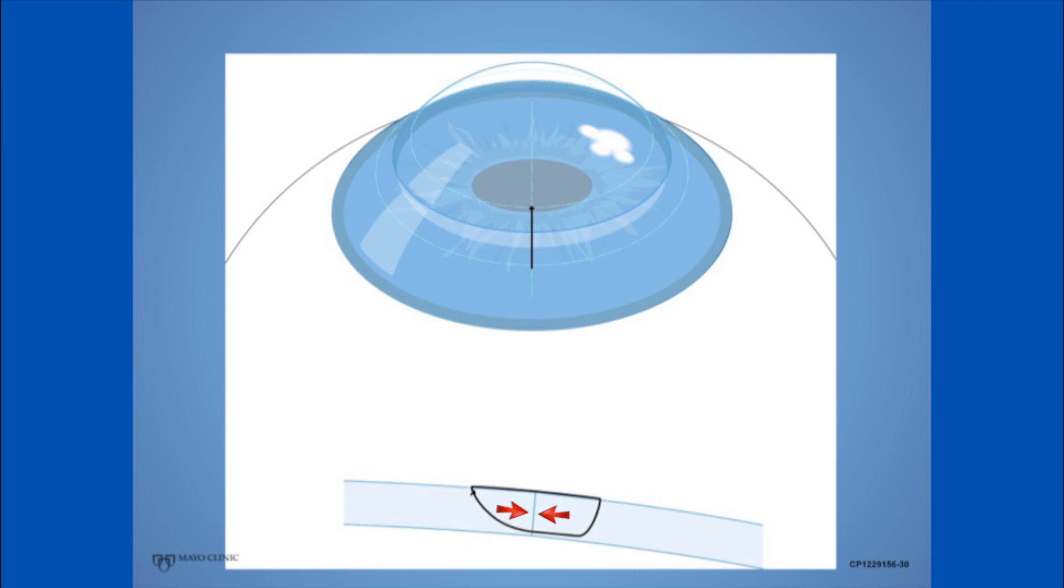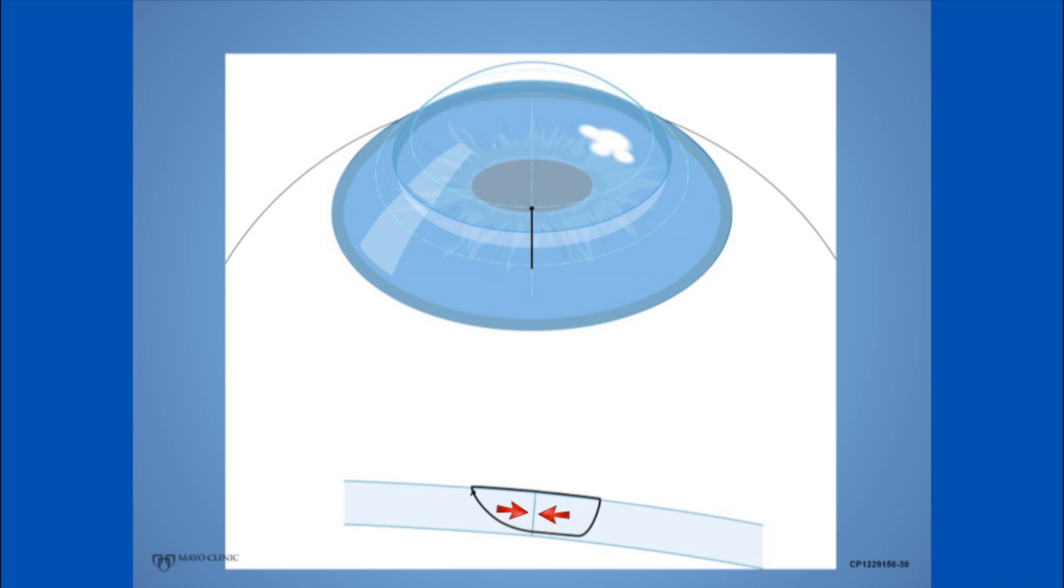Finally, we want to tie the suture so that the wound compression is just right, not too loose to leak and not so tight that it induces a large amount of astigmatism. Each of these steps, which looks easy on a figure, actually has a number of setup steps that precede it.